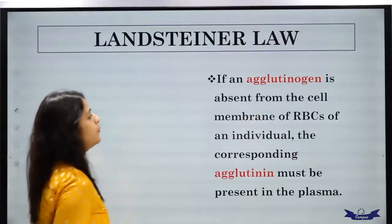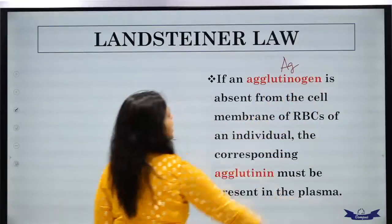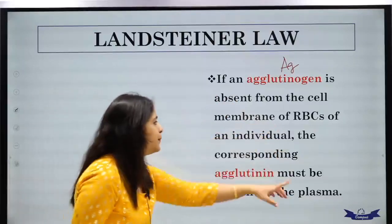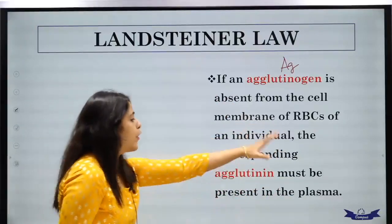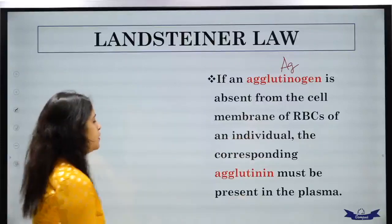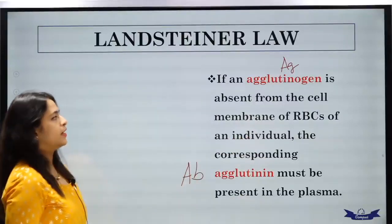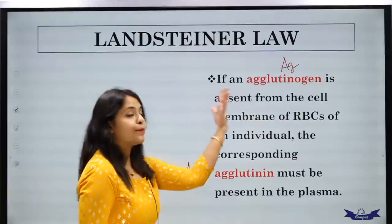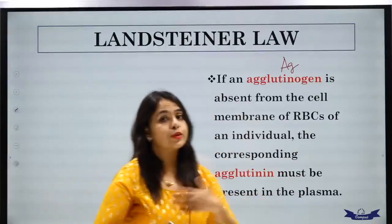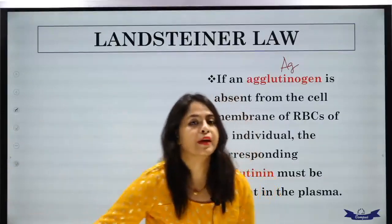The second point of Landsteiner's Law: if an agglutinogen (antigen) is absent from the RBC membrane of the individual, the corresponding agglutinin must be present in the plasma. It's the same first idea restated — if an antigen is absent from the RBC, then its corresponding antibody must be present in the plasma.